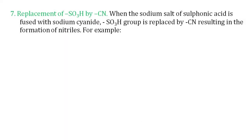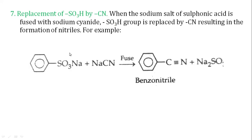Next is replacement of SO3H by CN. We add NaCN or KCN by fusion. The cyanide group replaces the sulfonate group and Na2SO3 is separated. The product obtained is benzonitrile.